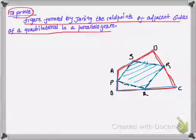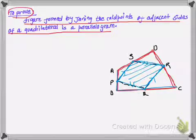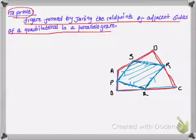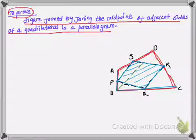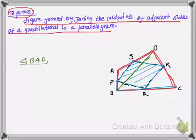It means the opposite sides should be parallel and equal. So if we can show that side PS is parallel to side QR, and similarly side SR is parallel to side PQ, then we can say that PQRS is our required parallelogram. The first step I'm going to do is join point B to D, so I'll get line segment BD.